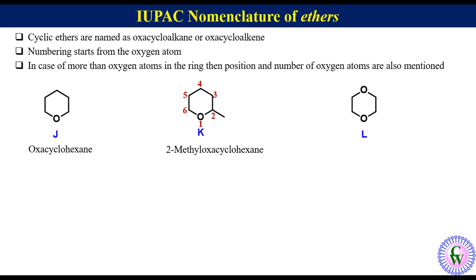Compound L: this molecule has six atoms in the ring with two oxygen atoms at positions one and four. So it will be named as 1,4-dioxacyclohexane.